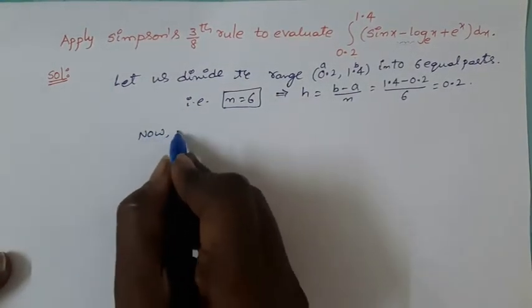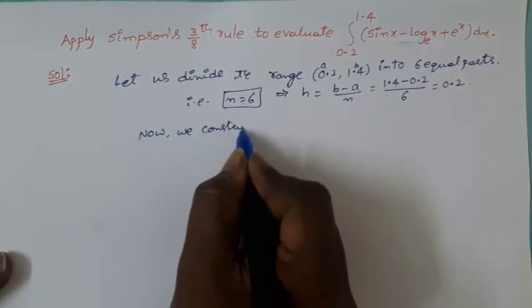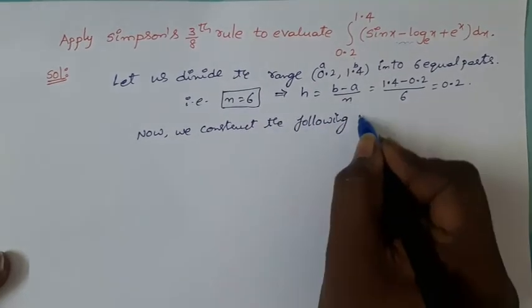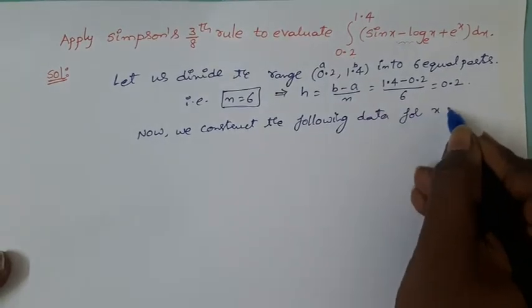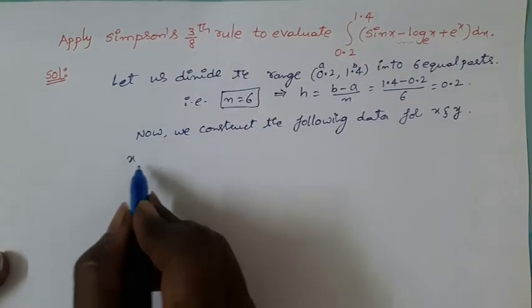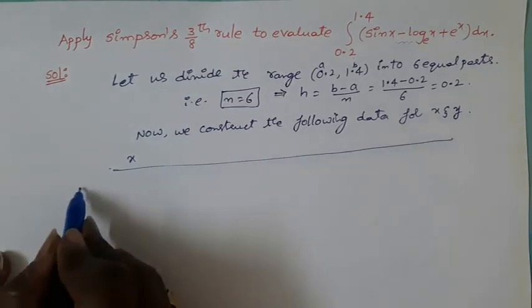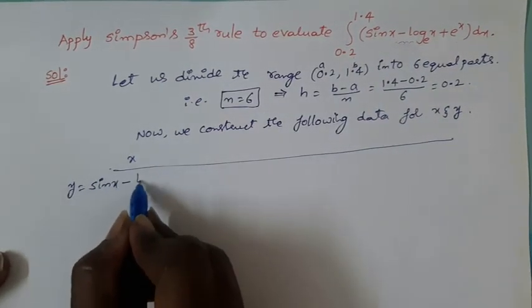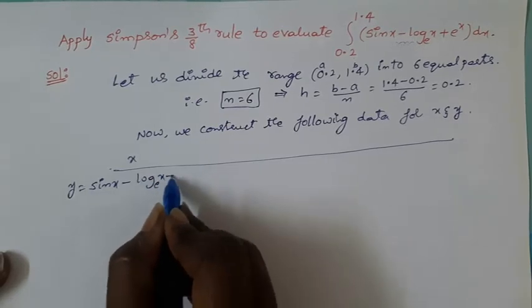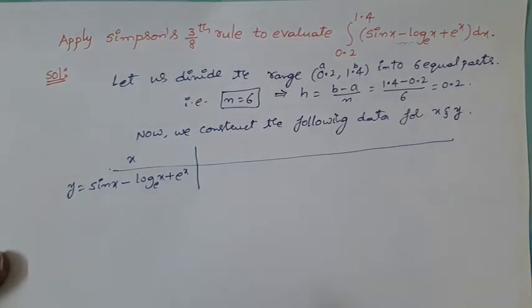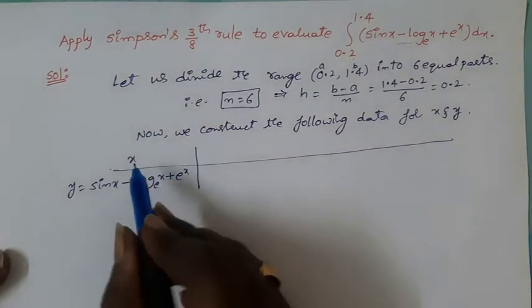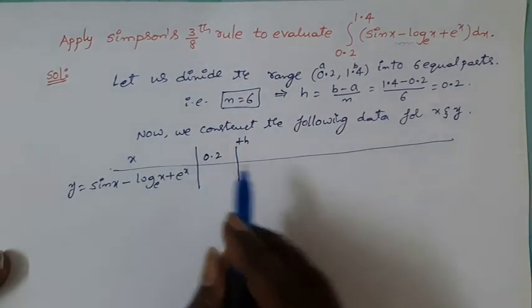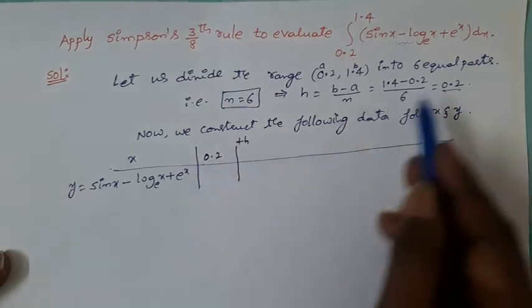Now we construct the following data for x and y. What is y here? y is nothing but the given function, which is sin(x) minus log(x) base e plus e^x. Now start the x values from the lower limit which is 0.2 and add plus h.